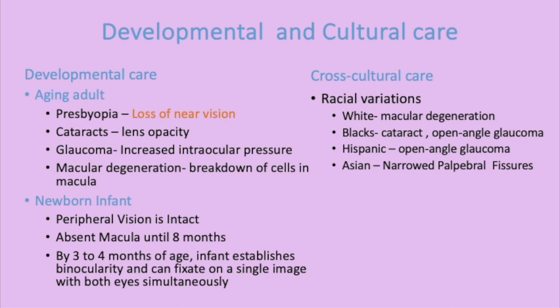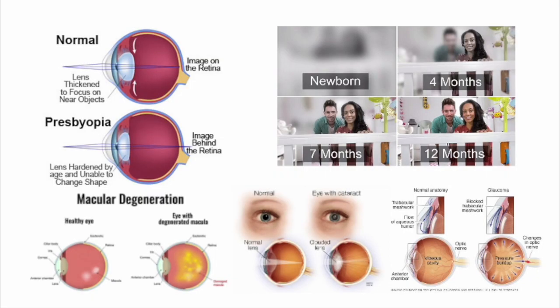This slide reviews visually what presbyopia, cataracts, macular degeneration, and visual field changes look like for patients. Particularly notable is the image showing what a newborn sees, then at four months, and as the macula area matures — what they're able to see by seven and twelve months of age. It does take about eight months before that macula can mature and perceive with more clarity.